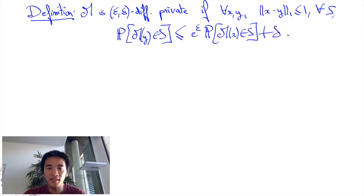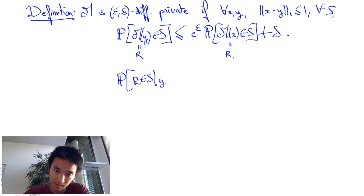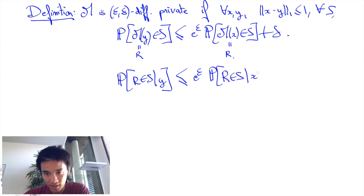An equivalent way of writing this is using conditional probability notations. Let us call R the response of the mechanism. Epsilon-delta differential privacy boils down to ||x - y||₁ at most 1 implies that the probability that a response is in S given the database y is at most e^ε times the probability that R is in S given the database x plus δ.